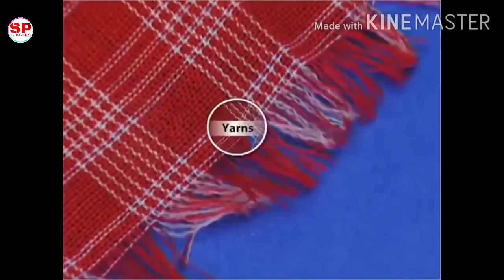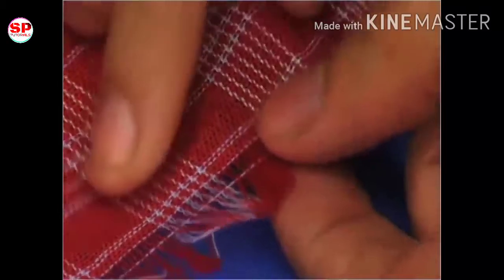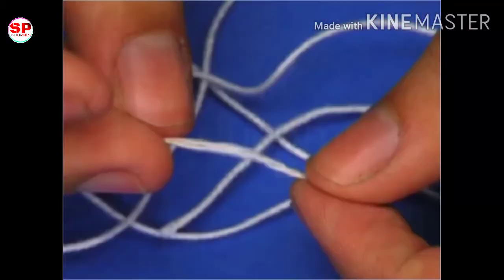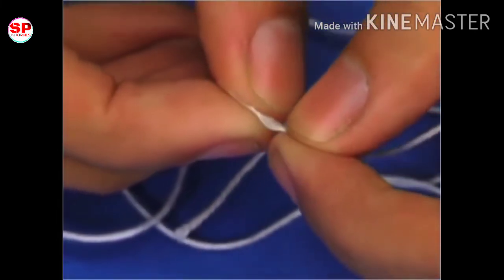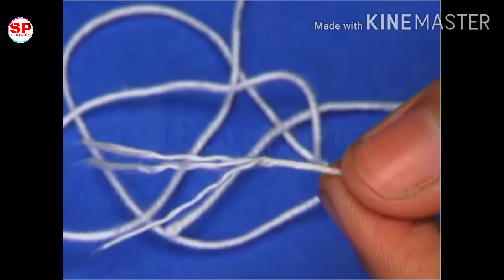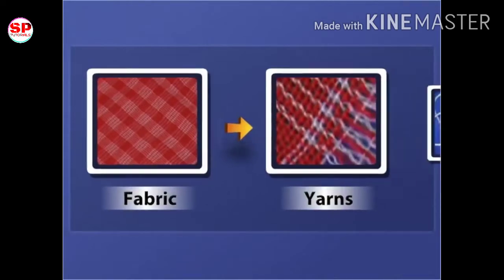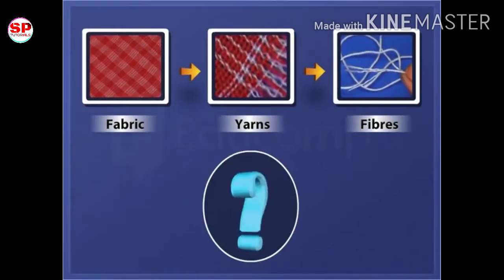Fabric is made of fine threads called yarns. You can easily pull out a yarn from fabric. If you untwist a yarn to loosen it, you will find that it consists of a number of thin hair-like strands called fibers. Thus, fabric is made of many yarns, and a yarn is made of many fibers.